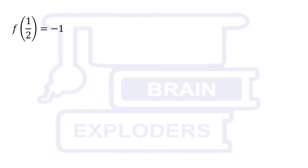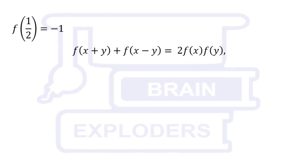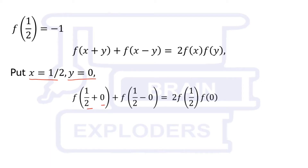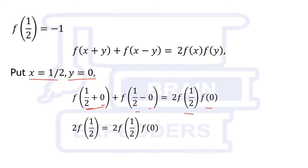We have f(1/2) = -1 and f(x+y) + f(x-y) = 2f(x)f(y). If we put x = 1/2 and y = 0, we get f(1/2) + f(1/2) = 2·f(1/2)·f(0), which gives 2·f(1/2) = 2·f(1/2)·f(0). Since f(1/2) ≠ 0, we can cancel it from both sides and get f(0) = 1.